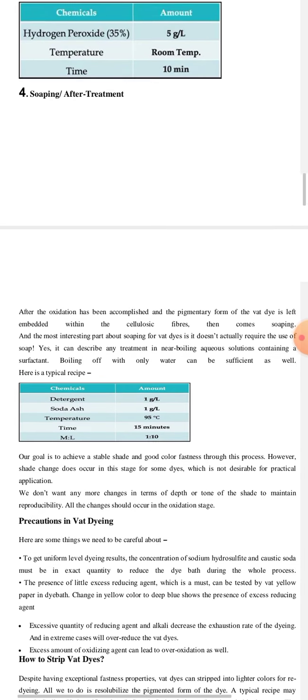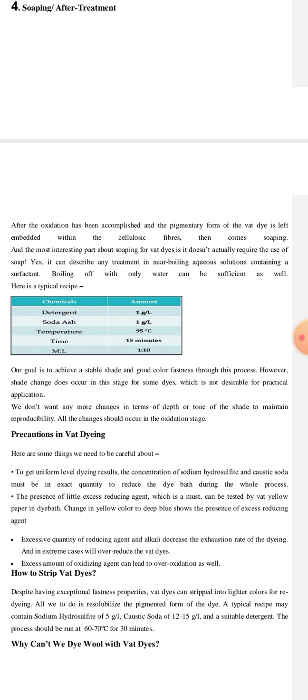The post-treatment and after-treatment includes soaping. The interesting part about soaping for vat dye is it doesn't actually require the use of soap. It can describe any treatment in near-boiling aqueous solutions containing a surfactant. This means that boiling off with only water can be sufficient as well. Typical recipe includes detergent 1 gram per liter, soda ash 1 gram per liter, temperature 95 degrees, time 15 minutes, material liquor ratio 1:10. Our goal is to achieve a stable shade and good color fastness through this process. However, shade changes occur in this stage for some dyes, which is not desirable. We don't want any more changes in terms of depth or tone of the shade to maintain reproducibility. All the changes occur in the oxidation state.